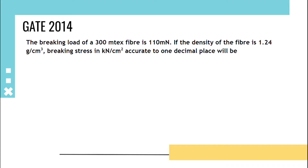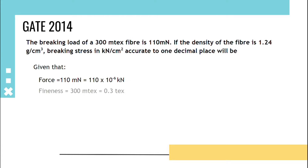The breaking load of a 300 millitex fiber is 110 milli-newton. If the density of the fiber is 1.24 gram per centimeter cube, breaking stress in kilonewton per centimeter square accurate to one decimal place is asked. Given that force is 110 milli-newton, we convert it to 110 × 10⁻⁶ kilonewton. Fineness is 300 millitex, which converts to 0.3 tex, and density is given as 1.24 gram per centimeter cube.